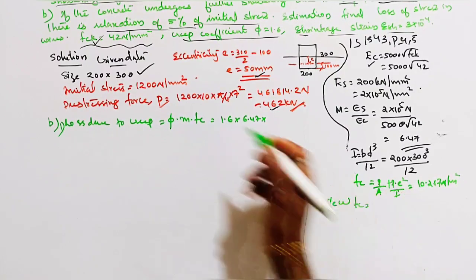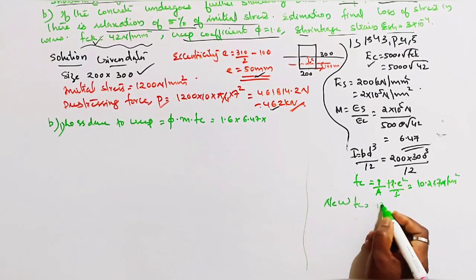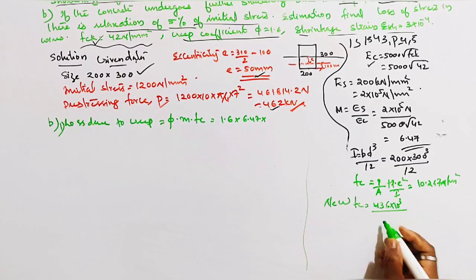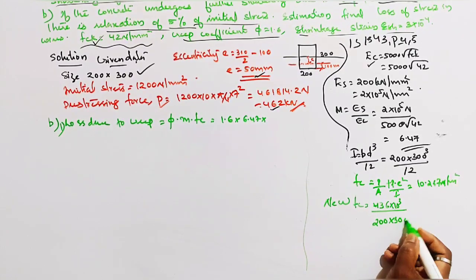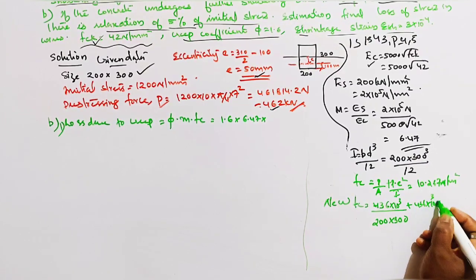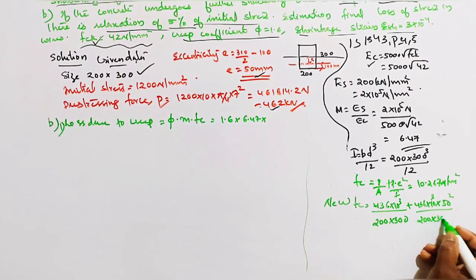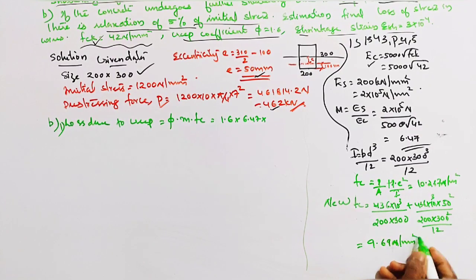New fc calculation: P = 436 × 10³ divided by (200 × 300), plus 436 × 10³ × e × 50² divided by (200 × 300³ / 12). New fc = 9.69 Newton per mm square.